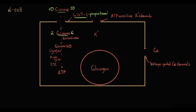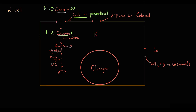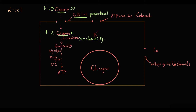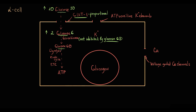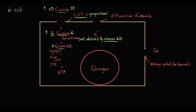The higher the glucose level in the blood, the higher the glucose incoming to the cell. The reason why alpha cells use glucokinase as an energy sensor is that the activity of glucokinase is not inhibited by G6-phosphate. This permits alpha cells to phosphorylate all glucose molecules to G6-phosphate at the same time.